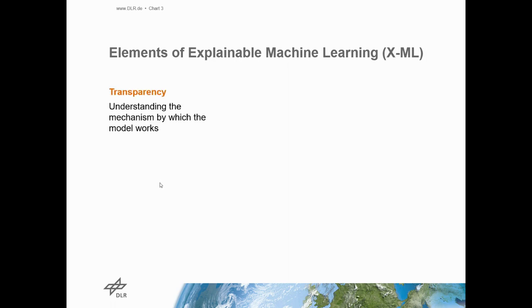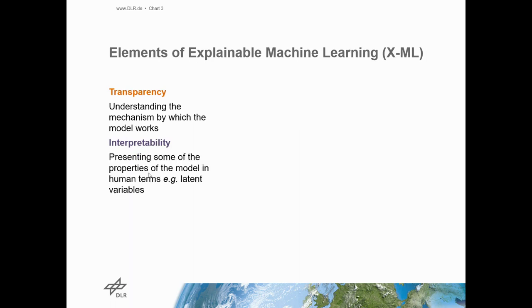Now what are the elements of explainable machine learning? The first one is transparency. Transparency is understanding the mechanism by which the model works. The second is interpretability, which is the ability to present some of the properties of the model in human understandable form, for example, presenting the latent variables.